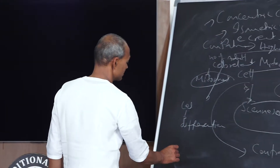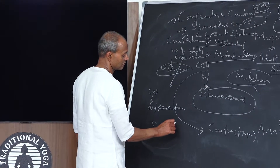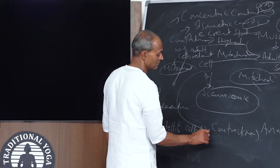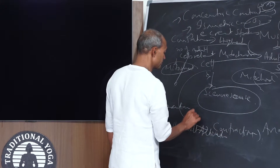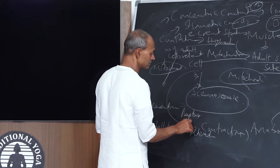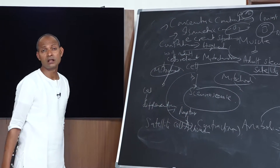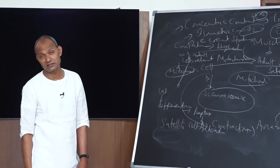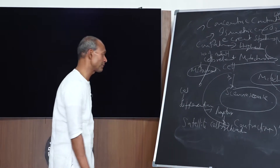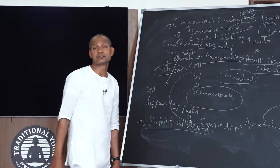Satellite cell activation occurs by rupture. The amount of rupture is directly proportional to the amount of arachidonic acid released, and the amount of arachidonic acid released is directly proportional to the satellite cells released.